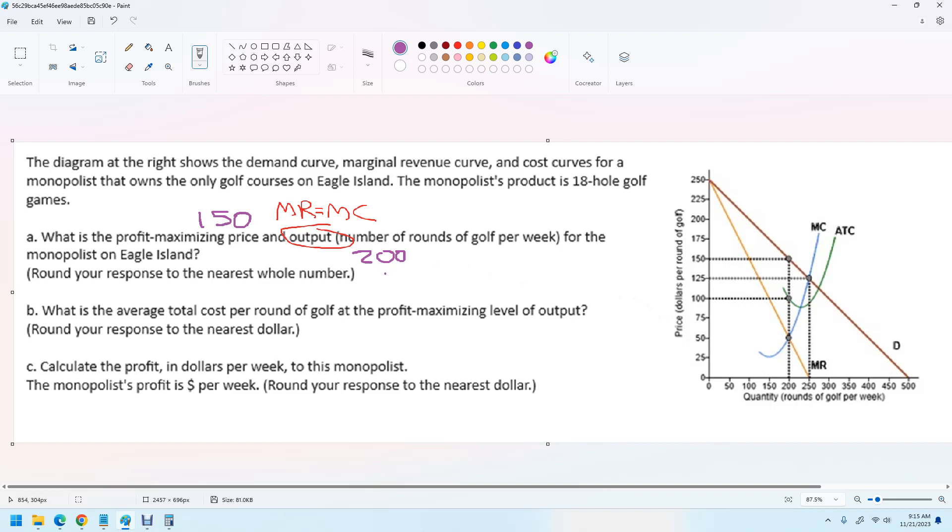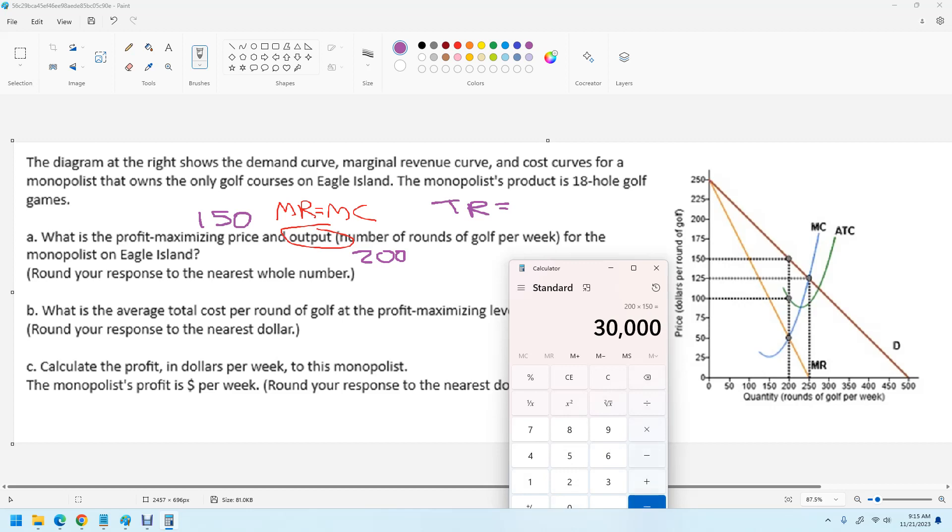If you were calculating the total revenue, total revenue for that, if you were asked to do that, would be 200 times 150. Okay. So that's pretty easy. It's not what the question's asking here, but just in case, let's do it right here. 200 times 150 would be 30,000. The total revenue of 30,000.